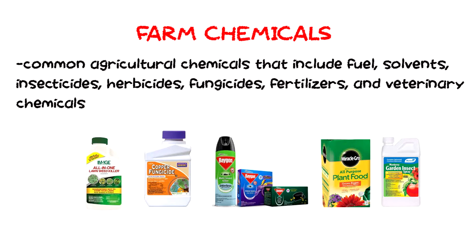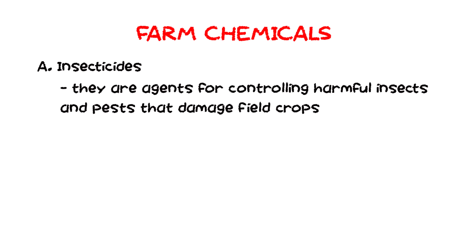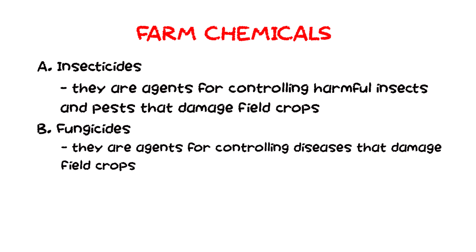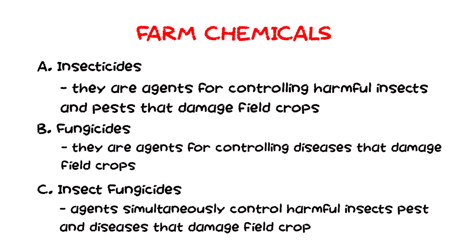Another material found in the environment are farm chemicals. These are common agricultural chemicals that include fuel, solvents, insecticides, herbicides, fungicides, fertilizers, and veterinary chemicals. Insecticides are agents for controlling harmful insects and pests that damage crops. Fungicides are agents for controlling diseases that damage field crops. And insect-fungicides are agents that simultaneously control harmful insects, pests, and diseases that damage field crops.